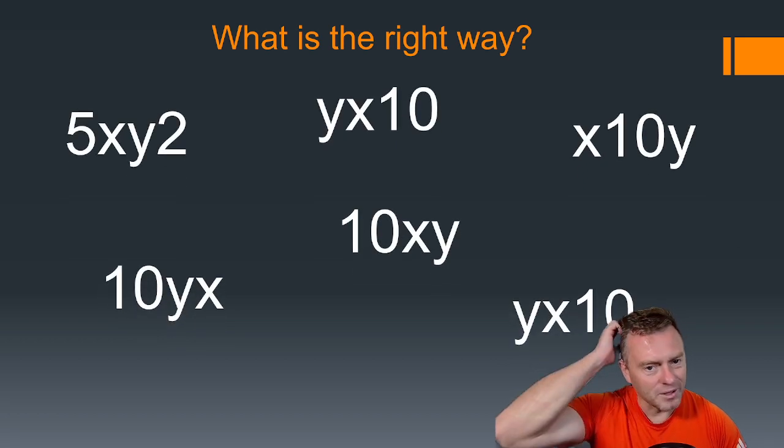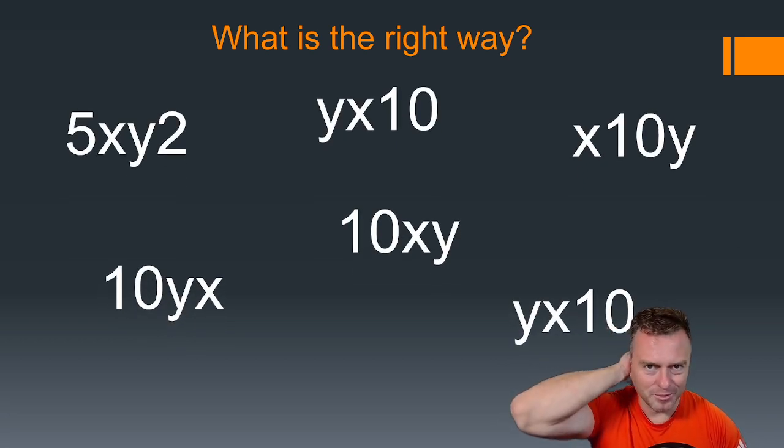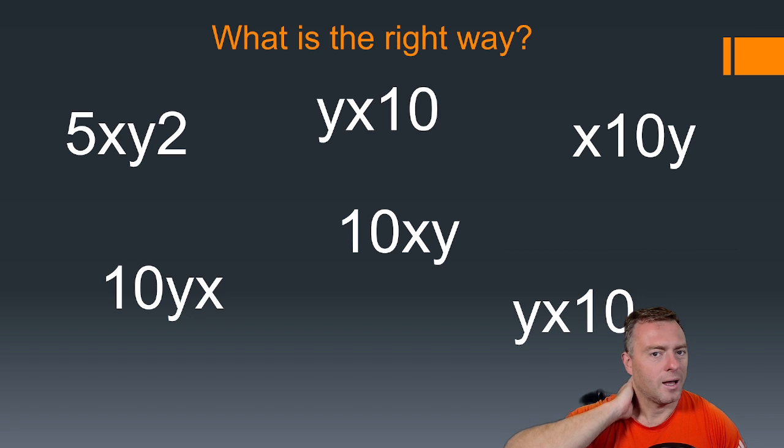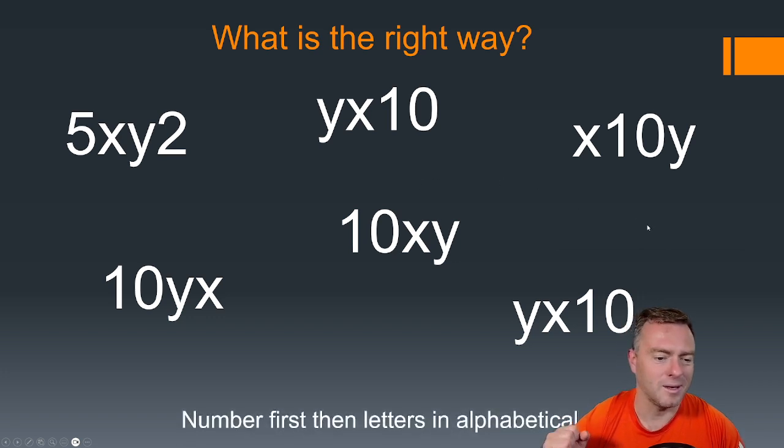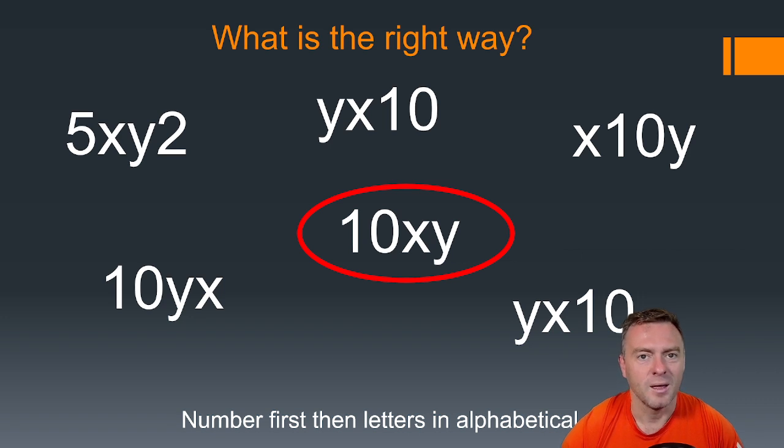So what is the right way when we express a variable? This is really important when we get to harder things. All these are valid, except probably with the 5xy too. But there's a better way of writing it, and it's actually the one in the middle here. You always write the number first, then you put the letters in alphabetical order. So 10 and then xy. This is the best way of writing it so you don't get confused when we do more complex things later down the track. Always put the numbers first, and then in alphabetical order write the variables if there's multiple variables timesing itself.